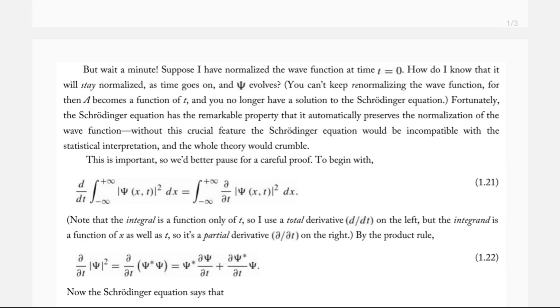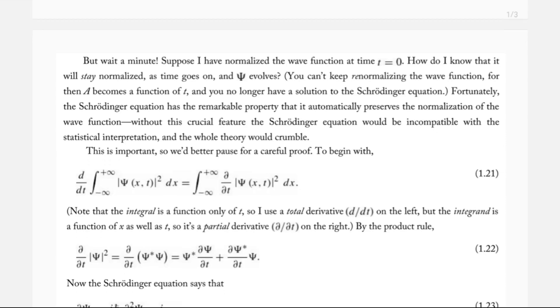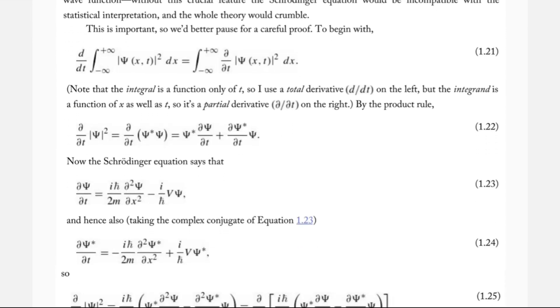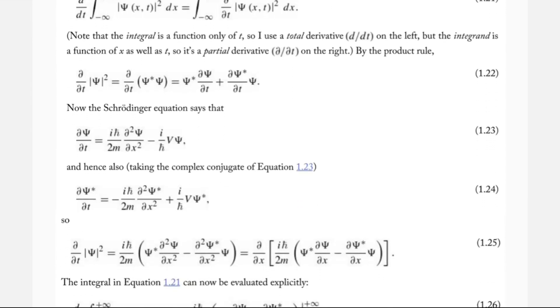And that's really the context of this whole proof, that's what's going on here. We're trying to prove that you don't need to re-normalize the wave function for every different value of t, because the Schrodinger equation has this property, where it's going to preserve the normalization of the wave function, even as time changes.